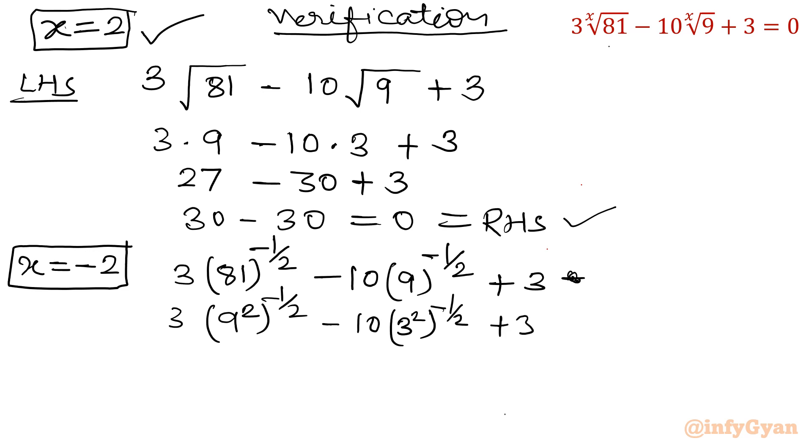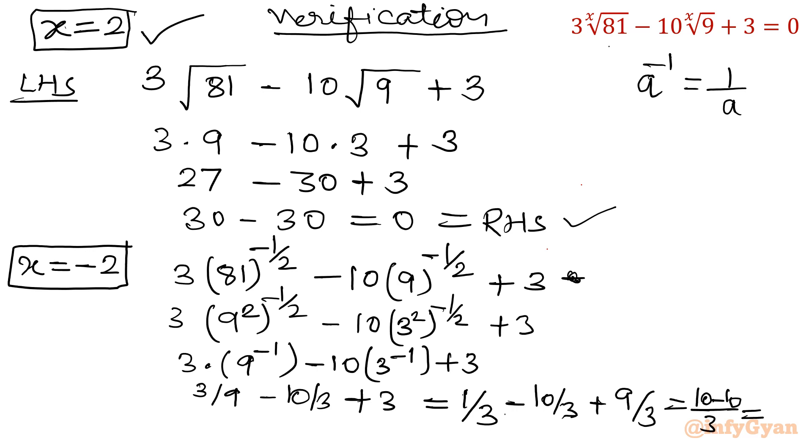So this half term will cancel. What is left? 3 times 9 power minus 1 minus 10 times 3 power minus 1 plus 3. In next step, 3 over 9 minus 10 over 3 plus 3. I can write 1 by 3 minus 10 by 3 plus 9 by 3. Now common denominator 3. 9 plus 1 is 10. 10 minus 10 by 3. So that value is 0 by 3, which is 0, which is our RHS. And it is verified. So this value is also true.